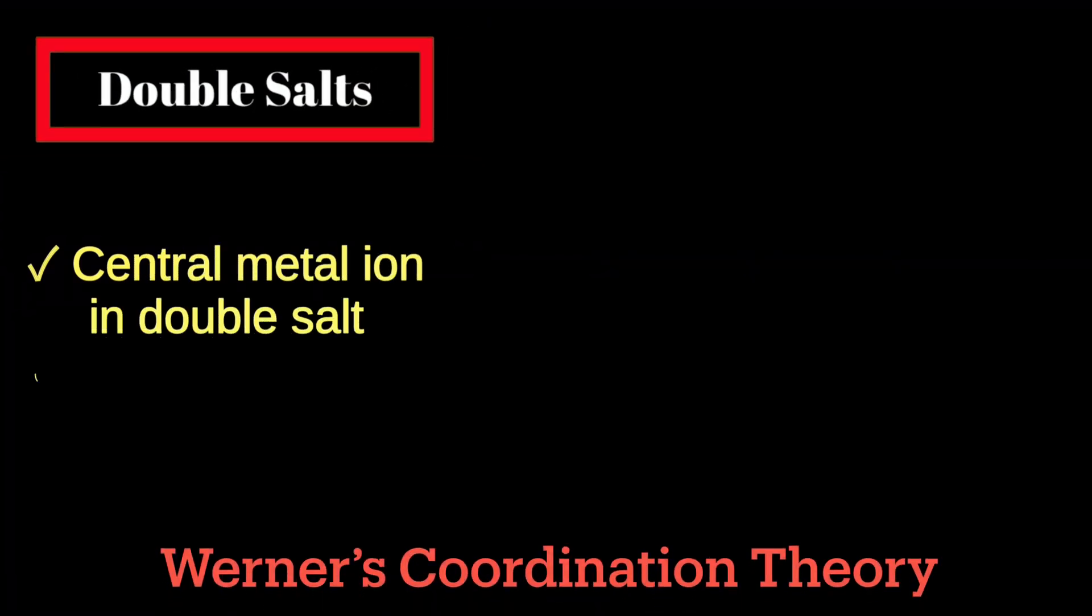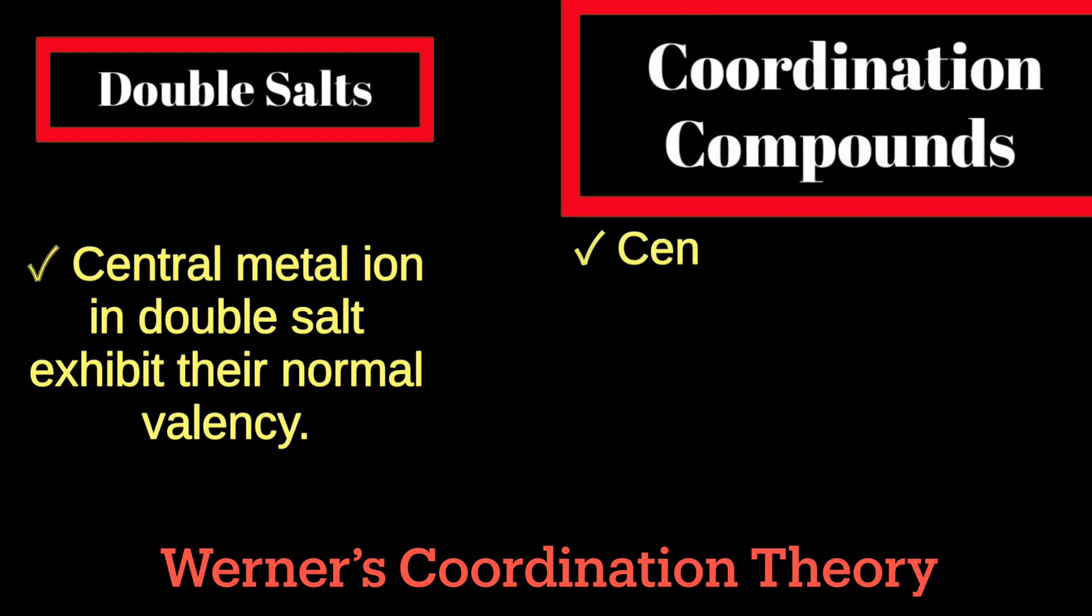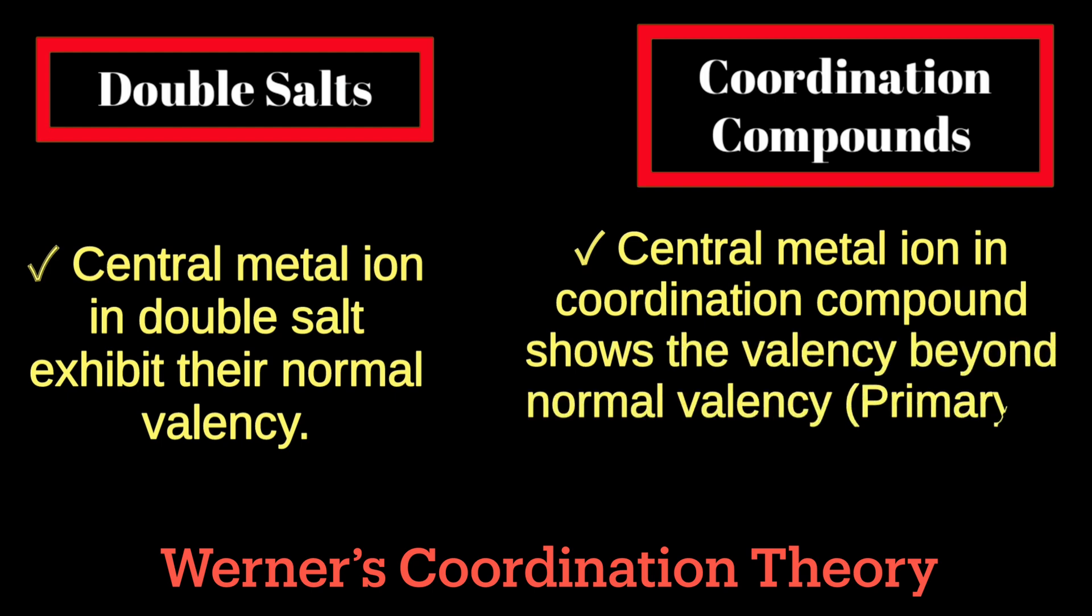Now the fourth point of difference: central metal ion in double salt exhibits their normal valency, while in coordination compounds, the central metal ion shows the valency beyond normal valency, that is the primary valency and the secondary valency. You will know more about the primary and secondary valency in Werner's coordination theory in the incoming videos.